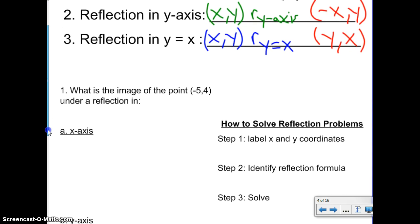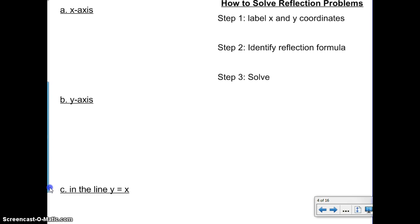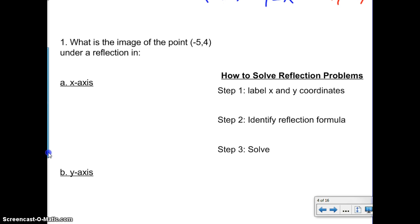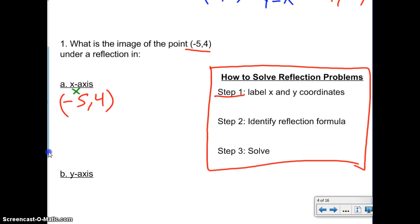Problem one is split into three parts: a, b, and c. It says, what is the image of the point (-5, 4) under a reflection in the x-axis? We have our steps for how to solve reflection problems. Step one: label your x and y coordinates for your original point. So our point is (-5, 4). This is our x and this is our y.